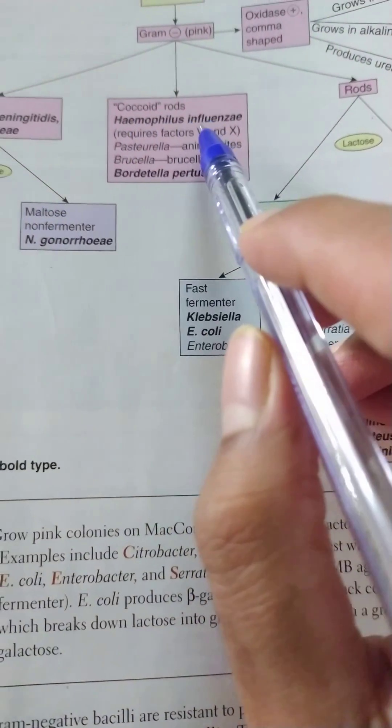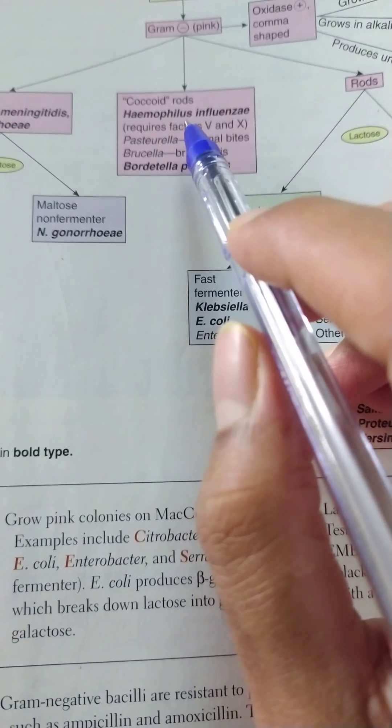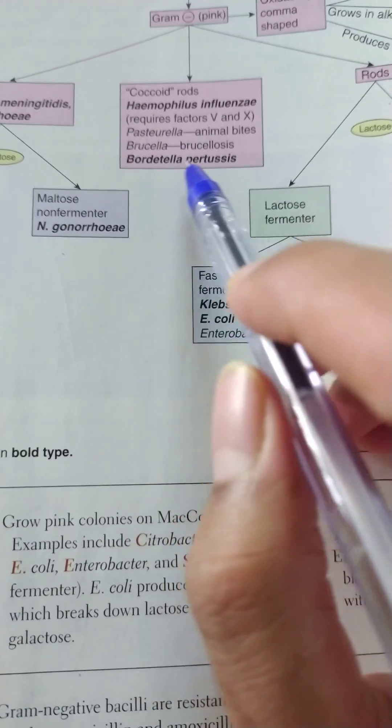Coming to coccobacillus, it includes Haemophilus influenzae, Pasteurella, Brucella, and Bordetella pertussis.